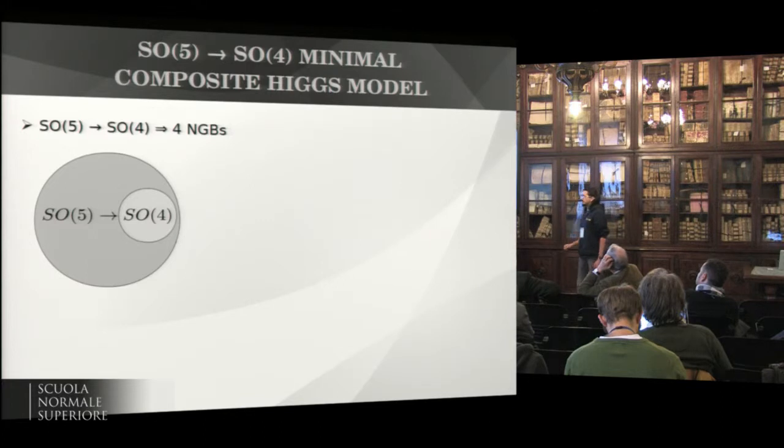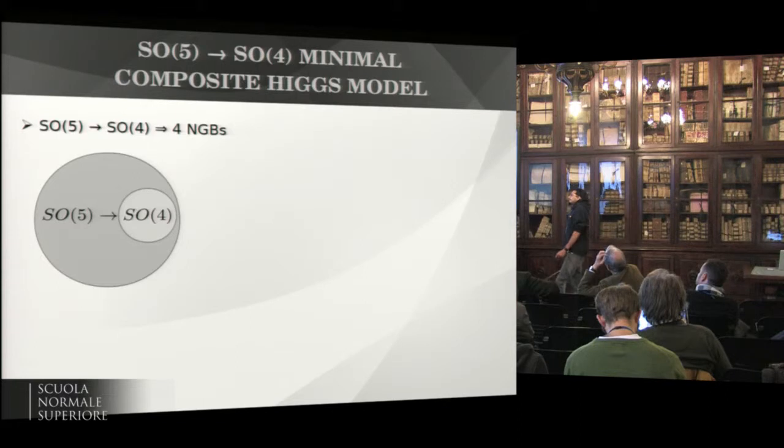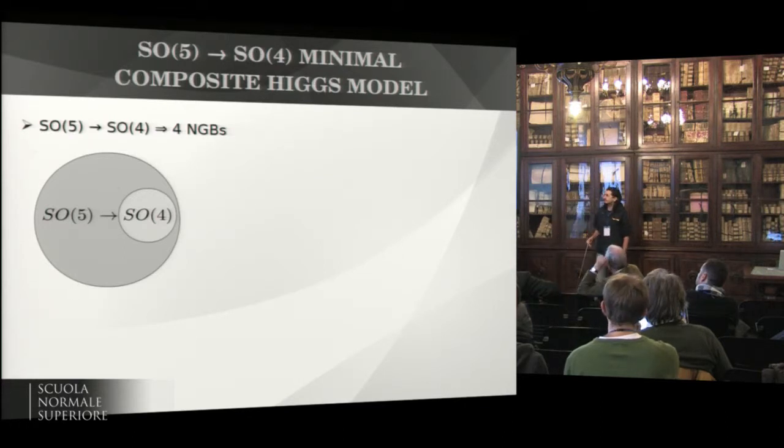But this will need, of course, actual modeling, so let us fix the model. Let us choose the minimal composite Higgs model. It is minimal in the sense that it provides you with the three longitudinally polarized W and Z, the Higgs boson, and nothing else.